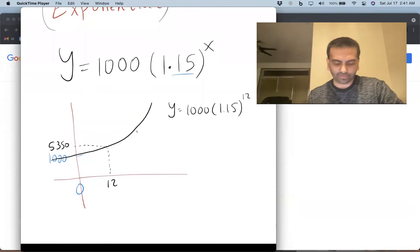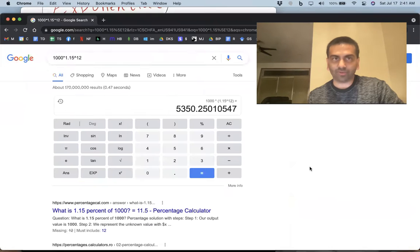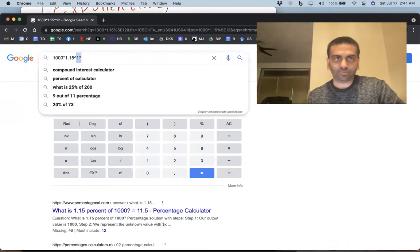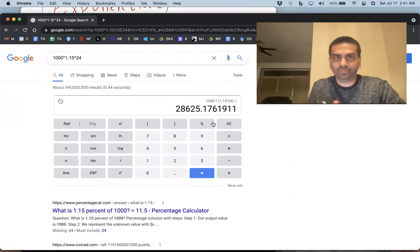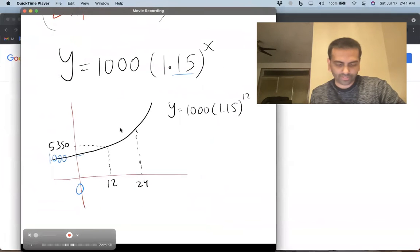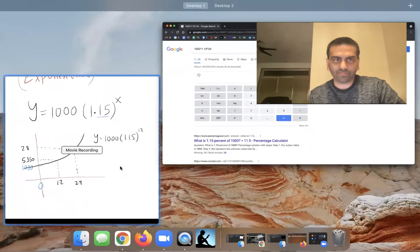What if we were asked about two years later, 24 months? Same thing, just replace that with 24 instead of 12. And here we get 28,000, 28,625.